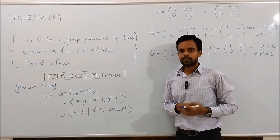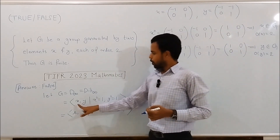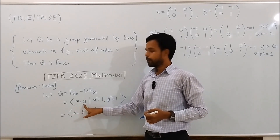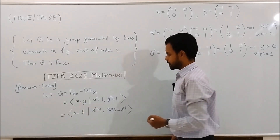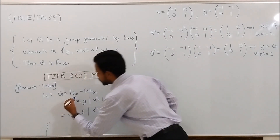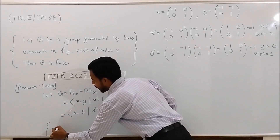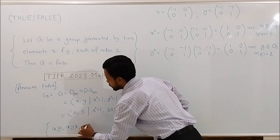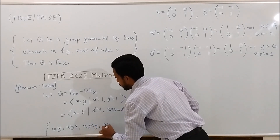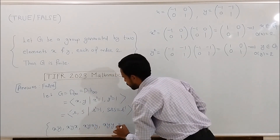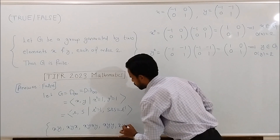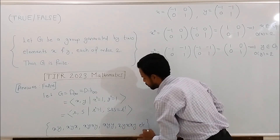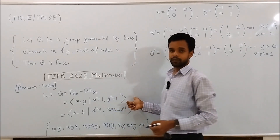Any element of this group will be a combination of x and y — that is, generated with the help of x and y. For example, other elements of this group will be of the form xy, xyx, xyxy, xyxyx, and so on. These are some of the elements of this group.